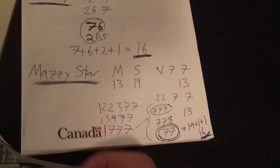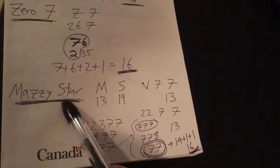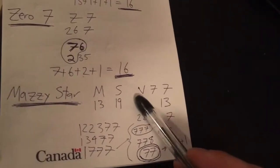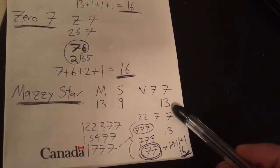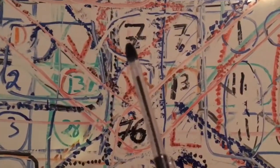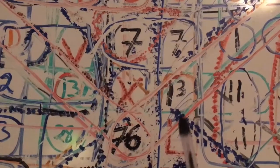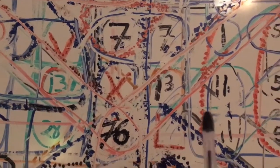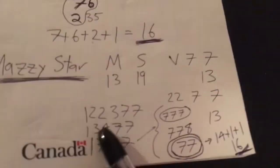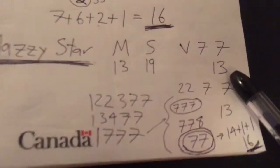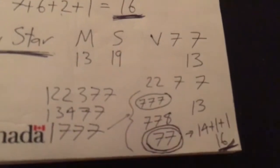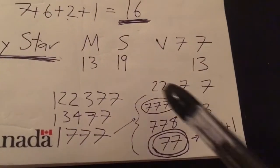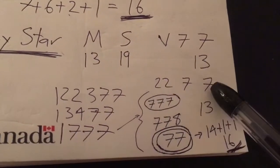Then Mazzy Star 13-19. Then I remembered the V77-13, which is here. It makes an L but the other way. Now V is the 22nd letter of the alphabet. 7, 7 is 13. So I said that's interesting.